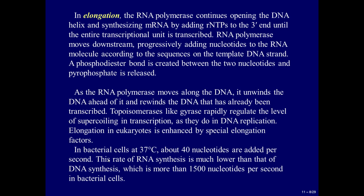RNA polymerase moves downstream, progressively adding nucleotides to the RNA molecule according to the sequences on the template DNA strand. A phosphodiester bond is created between the two nucleotides and pyrophosphate is released. As the RNA polymerase moves along the DNA, it unwinds the DNA ahead of it and rewinds the DNA that has already been transcribed. Topoisomerases, like gyrase, rapidly regulate the level of supercoiling in transcription, as they do in DNA replication.